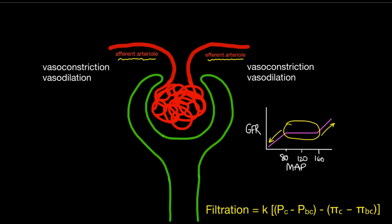Auto-regulation is achieved by changing vascular tone in the afferent and efferent arterioles. If blood pressure drops — say from hemorrhage — the afferent arteriole vasodilates, and the efferent arteriole vasoconstricts, thanks to angiotensin II preferentially acting on the efferent arteriole. As the efferent arteriole vasoconstricts, PC — pressure in the capillaries — increases. If blood pressure is elevated, we can vasoconstrict the afferent arteriole to reduce PC, maintaining GFR despite fluctuations in mean arterial pressure.